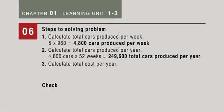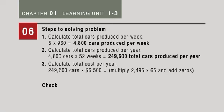Now look at our cost in step 3. The total cost per year, 249,600 cars at $6,500. We have zeros here, so we multiply 2,496 times 65, then add on four zeros. In this case, $1,622,400,000.